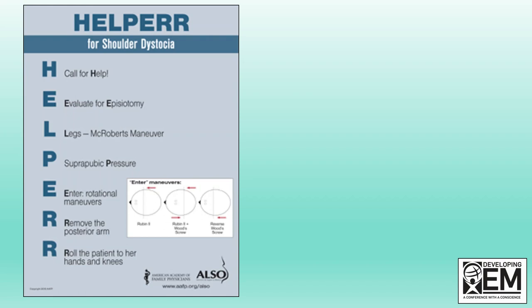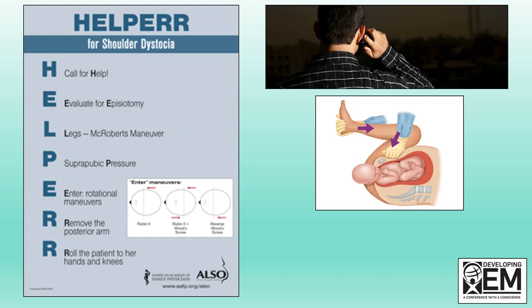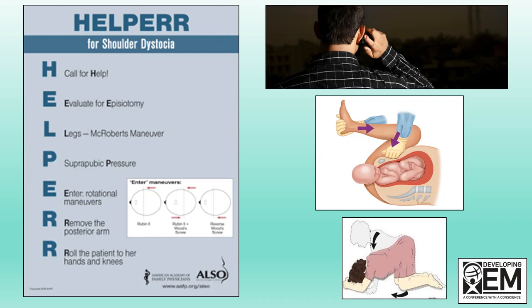The HELPER mnemonic for shoulder dystocia is an excellent tool and I'd advocate for it if you regularly work in obstetrics — additional steps include rotational maneuvers and removing the posterior arm. For the average emergency clinician, the four-step approach is effective more than two-thirds to three-quarters of the time and much easier to remember. Importantly, while doing legs up or suprapubic pressure, the mother should be trying to push the baby out whether or not she has a contraction.